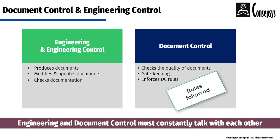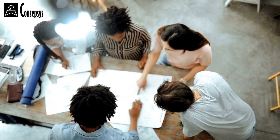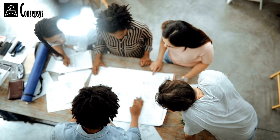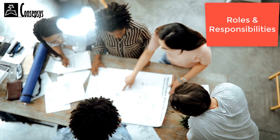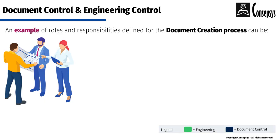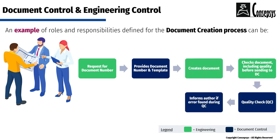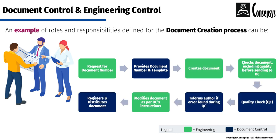So engineering and document control must constantly talk with each other. For this interaction to be efficient, it is important that roles and responsibilities are clearly defined and communicated. Here we have an example of a process captured to explain and define roles and responsibilities for each party. In the example, engineering tasks are shown in green and document control tasks are shown in blue.